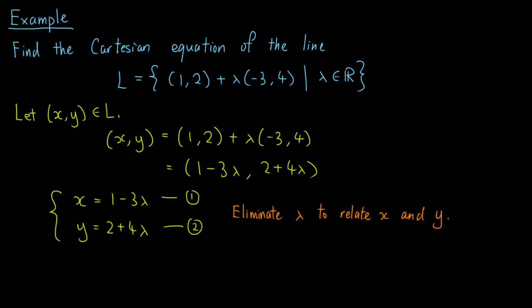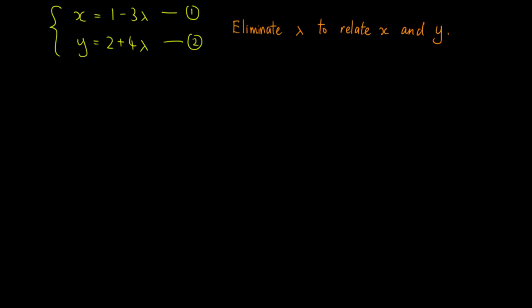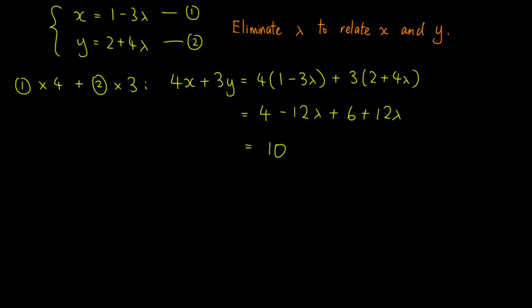By eliminating λ, we can find a relationship between x and y. So we take the first equation times 4 and add the second equation times 3. We get 4x + 3y = 4(1-3λ) + 3(2+4λ). By expanding, we have 4-12λ + 6+12λ, which is equal to 10. Hence, the required equation is 4x + 3y - 10 = 0.